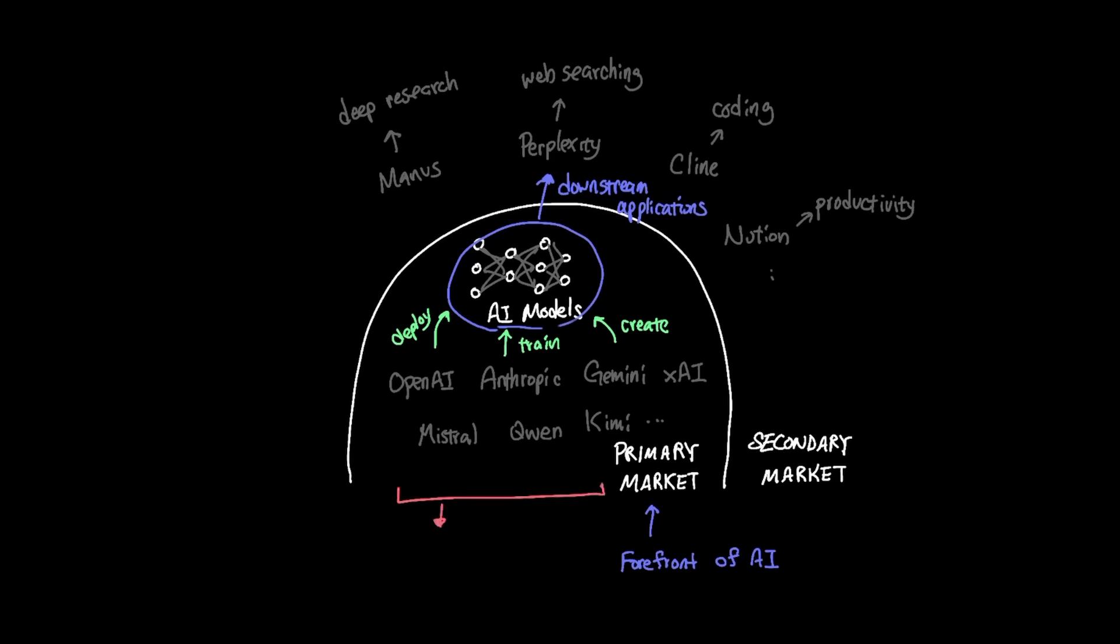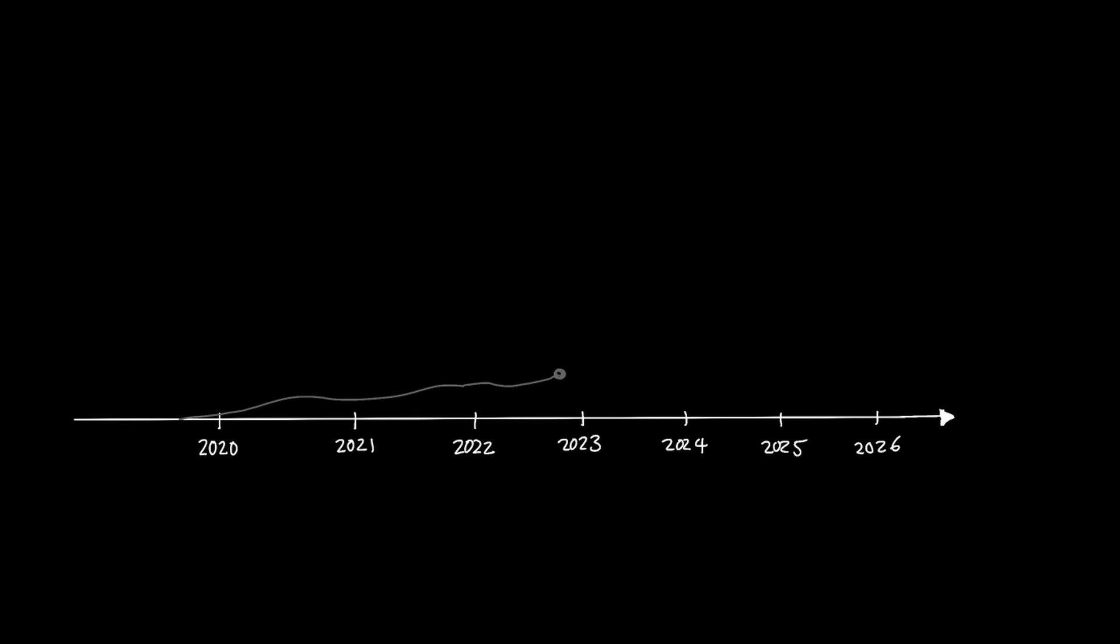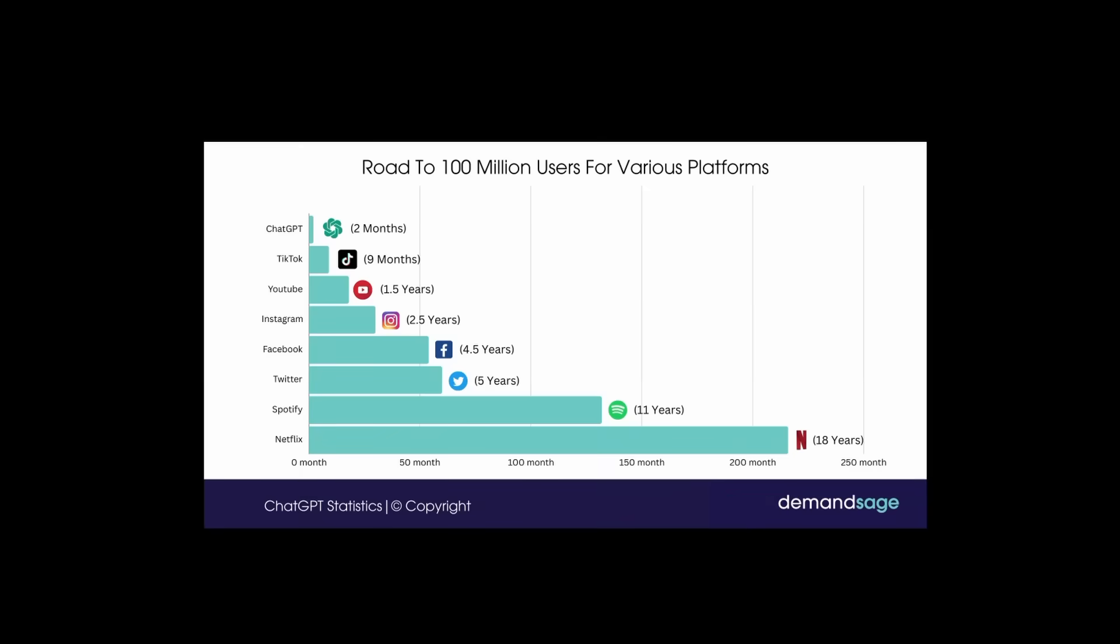So let's start by analyzing the primary market and see whether we truly have an AI bubble happening underneath. After OpenAI released ChatGPT to the public in November 2022, active users of ChatGPT grew to 100 million users in just two months. In comparison, Netflix took 18 years, Facebook took four and a half years, and Instagram took two and a half years.